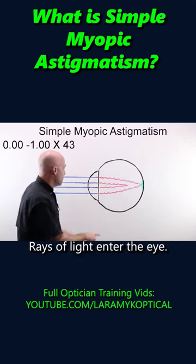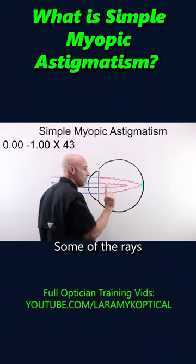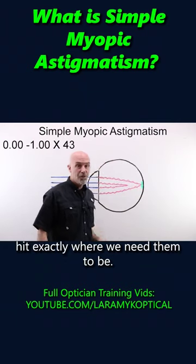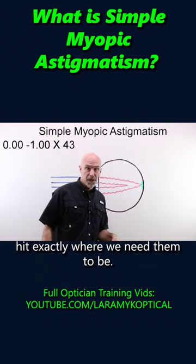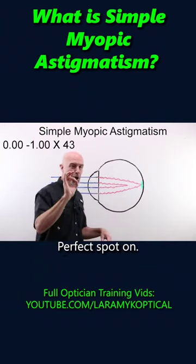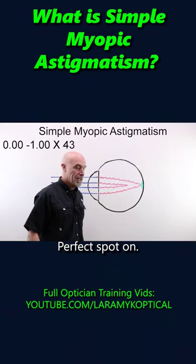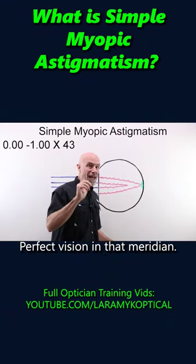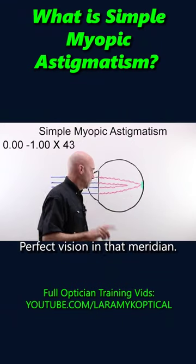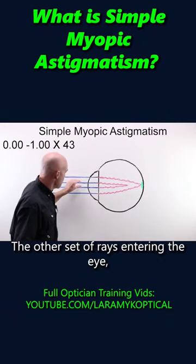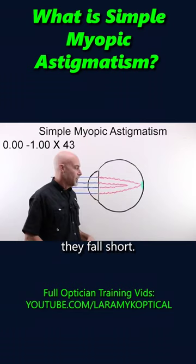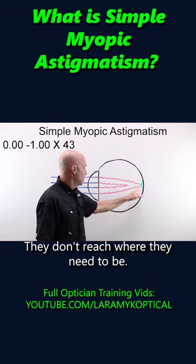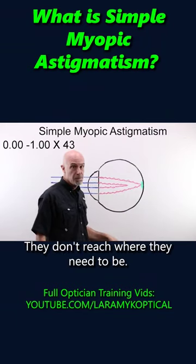Rays of light enter the eye. Some of the rays hit exactly where we need them to be — perfect, spot on, perfect vision in that meridian. The other set of rays entering the eye, they fall short. They don't reach where they need to be.